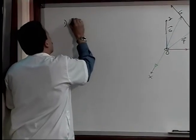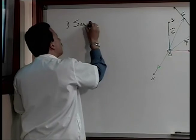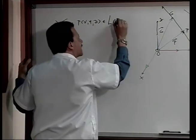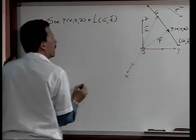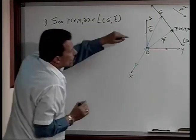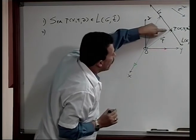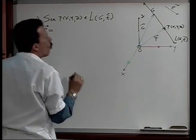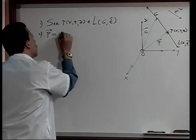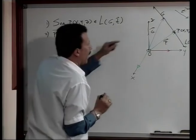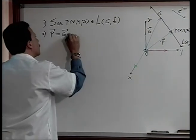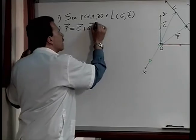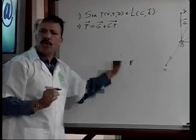Sea P un punto de coordenadas (X, Y, Z) perteneciente a la recta que pasa por el punto G y es paralela a T. Por la noción de suma, el vector de posición P lo podemos expresar como la suma entre el vector de posición G más el vector GP. Esto lo podemos fundamentar en las operaciones previamente establecidas entre los vectores de posición y vectores libres.